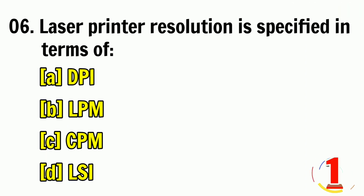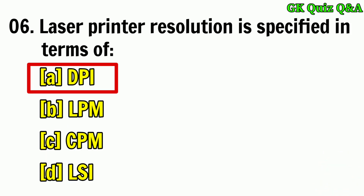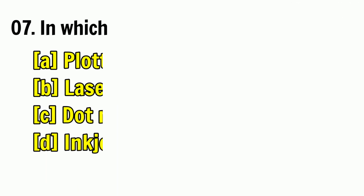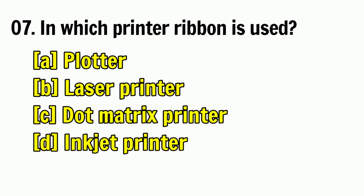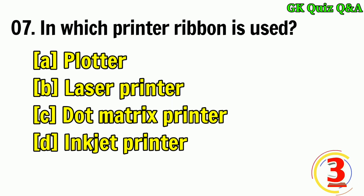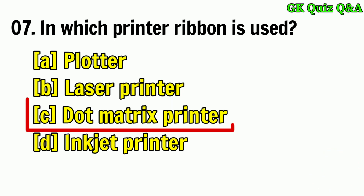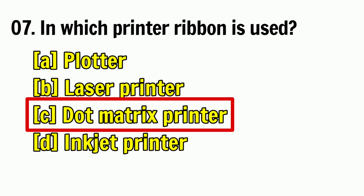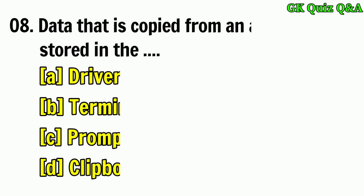Computer language Photon is useful in which field? Answer: C — Science. Laser printer resolution is specified in terms of? Answer: A — DPI. In which printer is a ribbon used? Answer: C — Dot matrix printer.